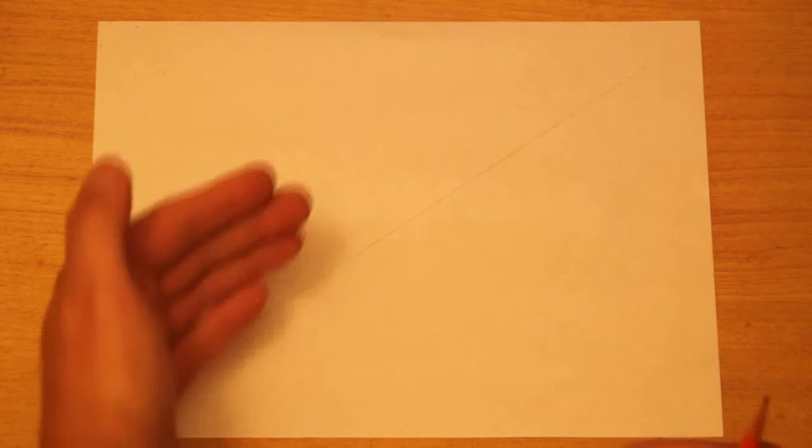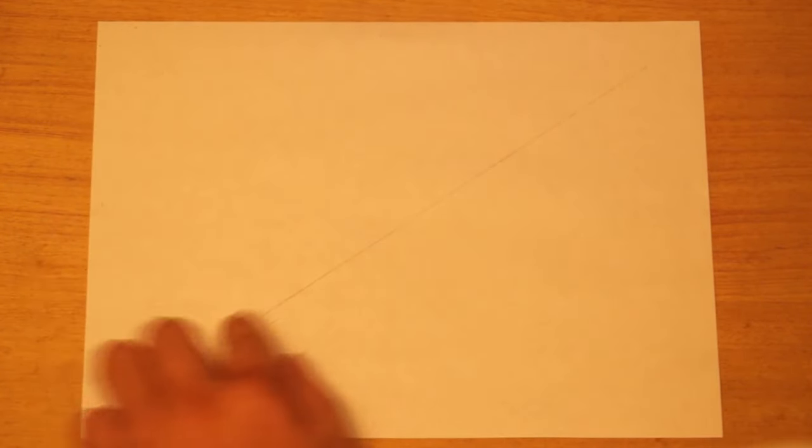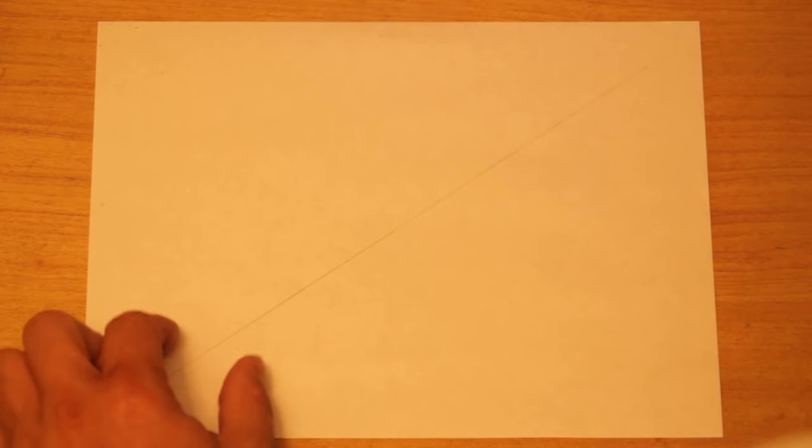The bat itself is symmetrical. So half of it, one side is kind of a mirror image of the other side. And this will help me to get everything in the right place. And that's why I'm starting off with this line.